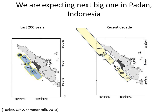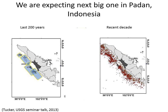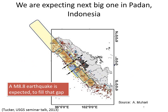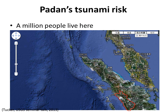A clear seismic gap is visible here. The question is: is this an area where stress doesn't accumulate, so you don't need to worry about future earthquake potential? The answer is no. By looking at historical earthquakes over the last 200 years, there was a big enough earthquake in the Padang area in 1797. By calculation, a magnitude 8.8 earthquake is expected to fill that gap and occur in Padang, Indonesia.